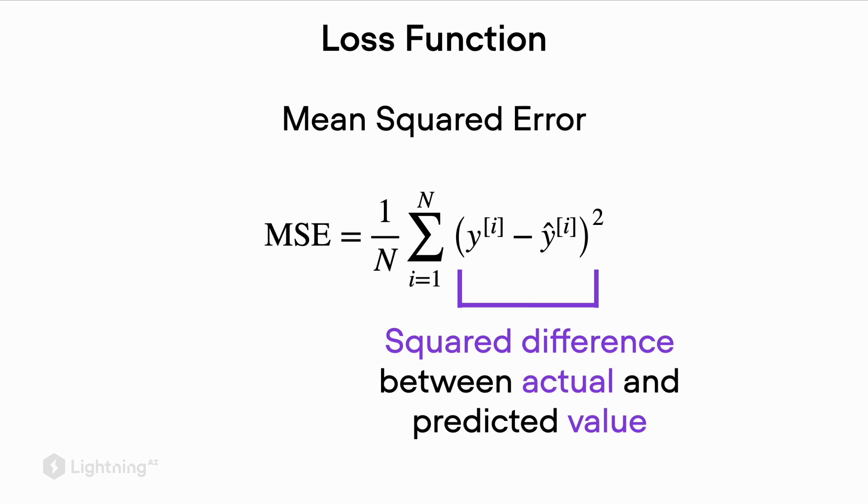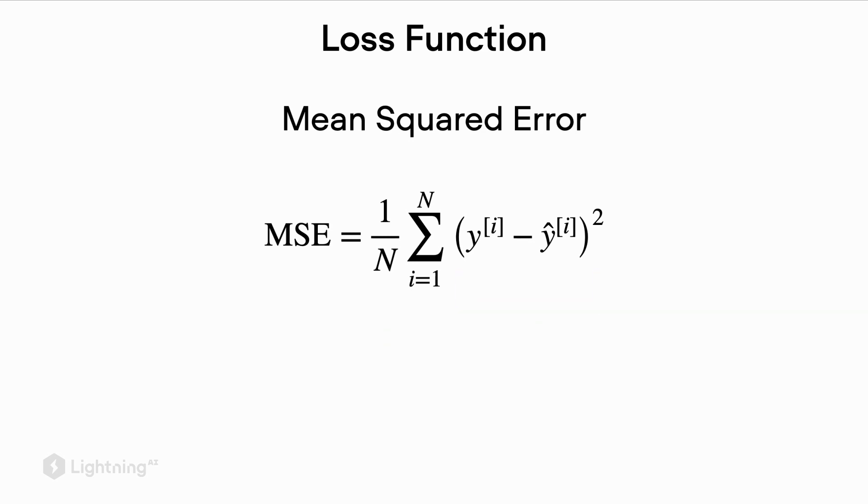And actually we compute the squared difference so that the sign, whether it's positive or negative, does not matter. Then after computing these squared distances we average those over all the training examples in the training dataset.